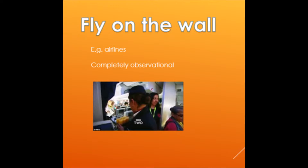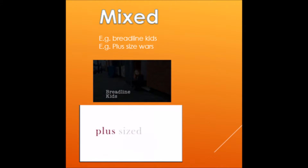A mixed documentary includes a combination of interviews, observational footage and narration. It can also include archive footage, which is footage that hasn't been filmed by the documentary filmmakers themselves.